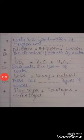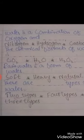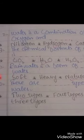Number 7: Water is a combination of oxygen and dash. Options: nitrogen, hydrogen, carbon. Correct option is hydrogen.